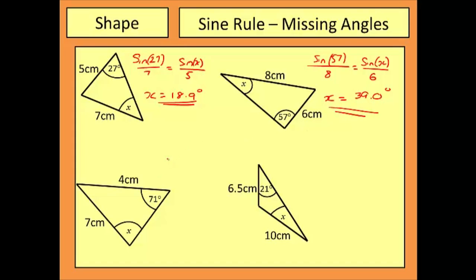Okay, on to the third example. When I set up my sine rule, I'm going to have sine 71 over 7 equals sine of X over 4. And just like before, I'm going to multiply both sides by 4, take the inverse sine. This is going to give me a value for my missing angle of X as 32.7 degrees.